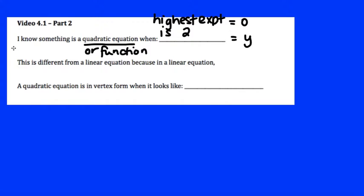You could also say that when it's in the form y equals ax squared plus bx plus c, that's when it's in standard form. Again, the highest exponent of that is a 2.